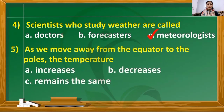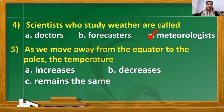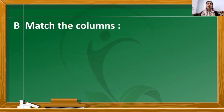The fifth question: as we move away from the equator to the poles, the temperature increases, decreases, or remains the same? The correct answer is decreases. Now let us move on to the next question, that is match the columns.